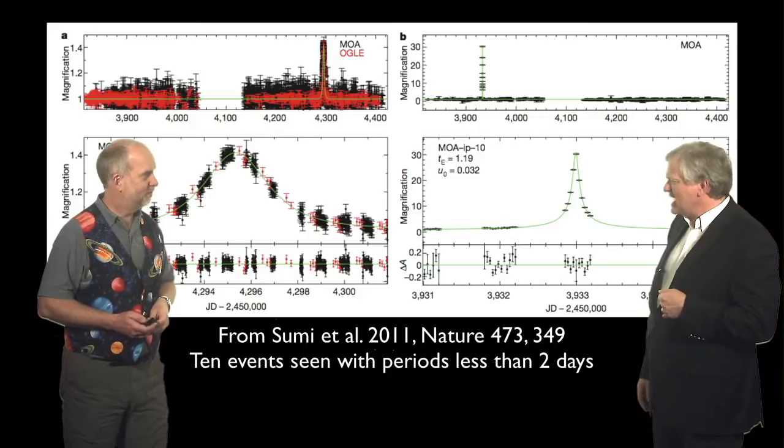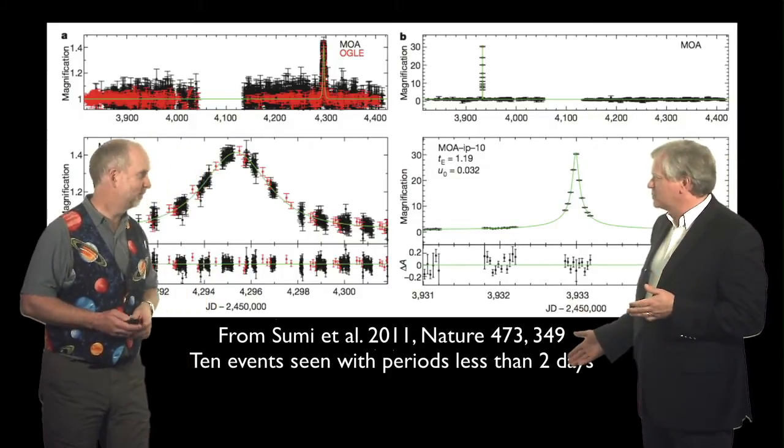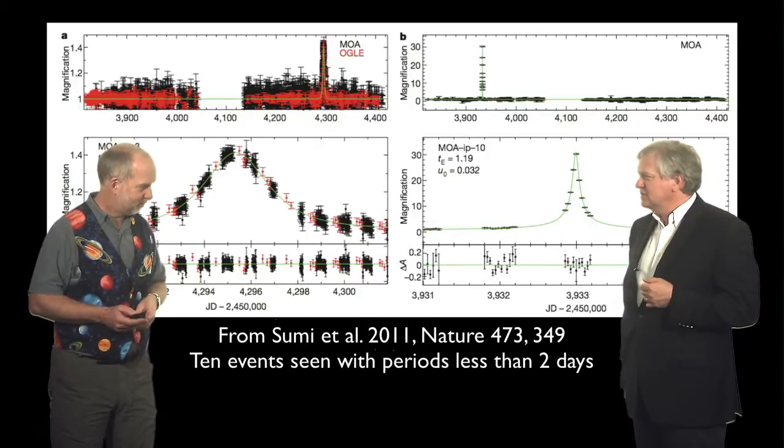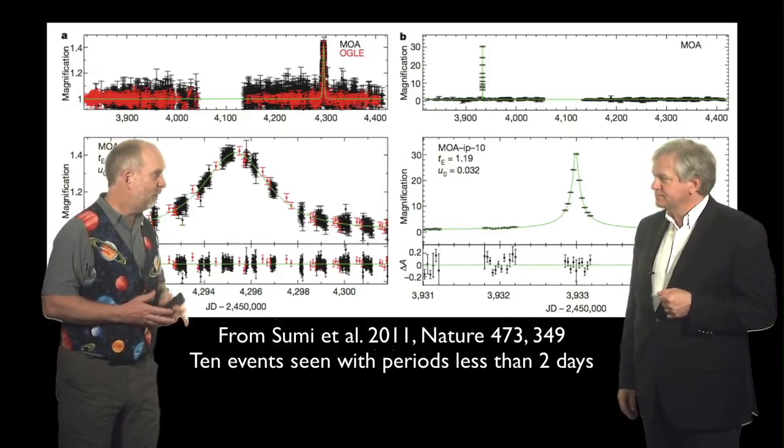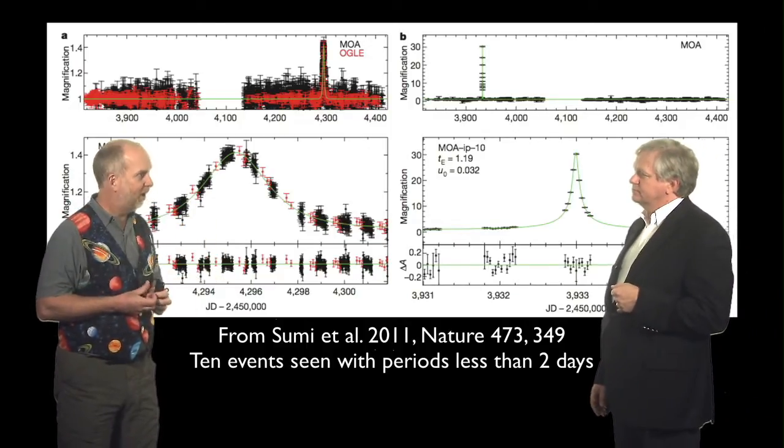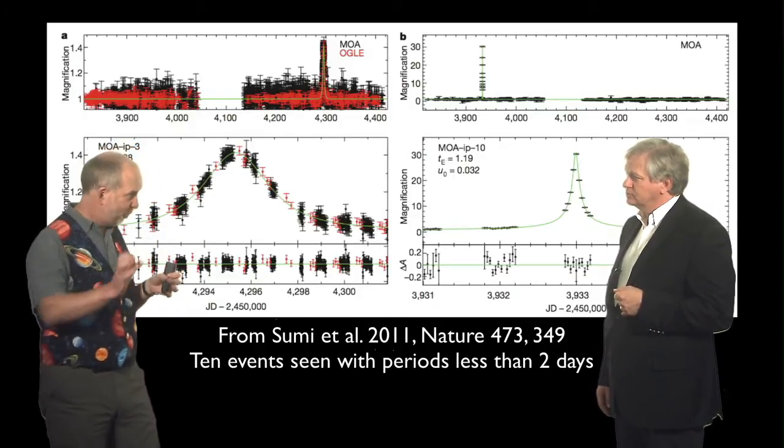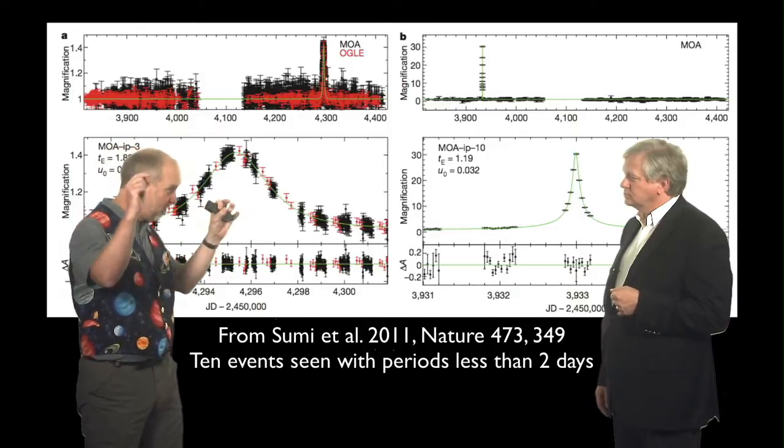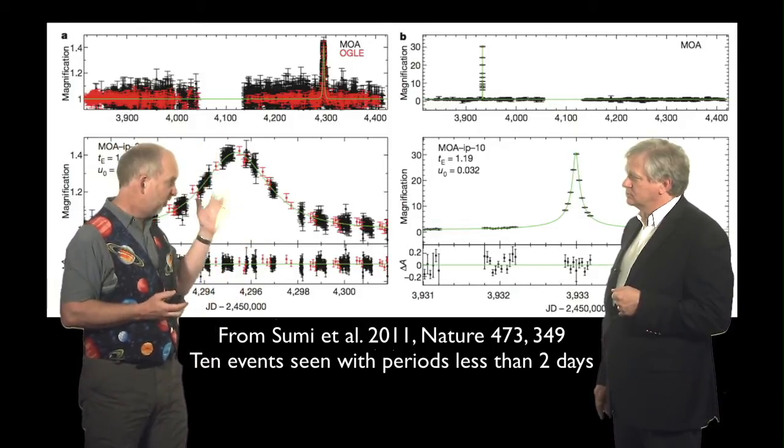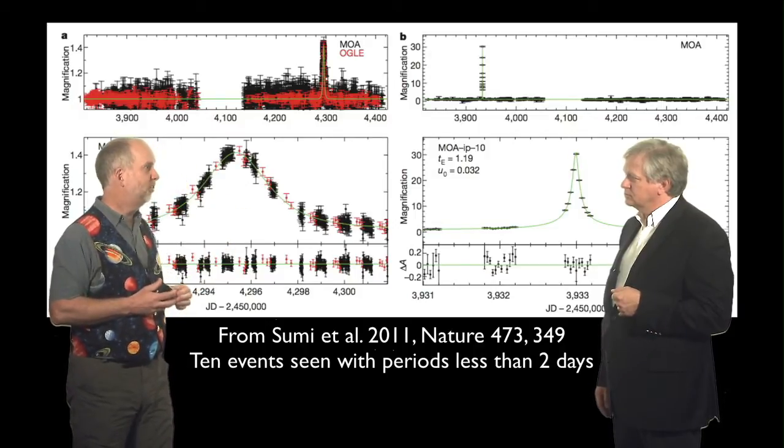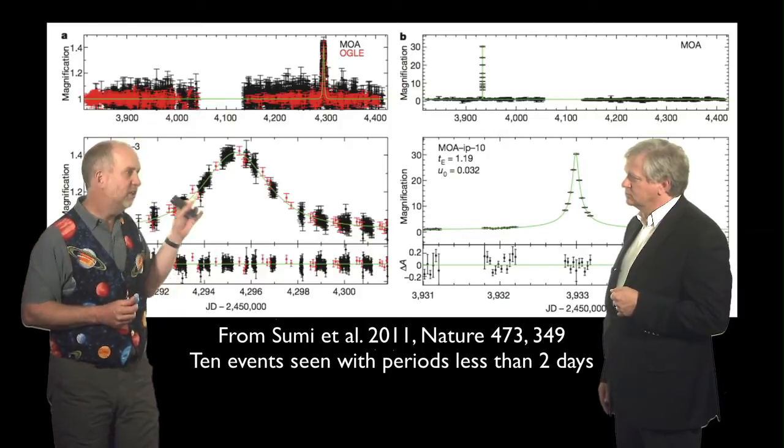Wow, so we have 10 events seen with these short little periods, which means they have to be little, tiny things. So what does that mean? What it means is you need an awful lot of planets that are not near a star. And because these are so hard to see, because the image plane event is actually so small, you have to get very lucky for the Earth's track to go near it. So seeing even seven or eight of the things that we actually see is telling us there must be huge numbers of these things out there.